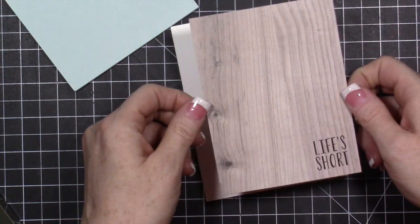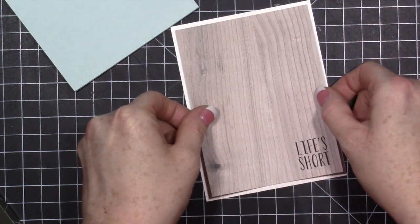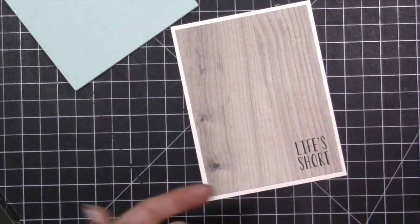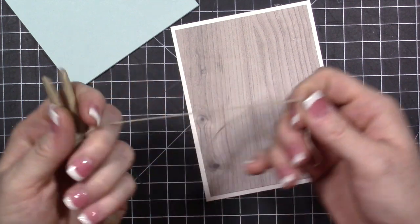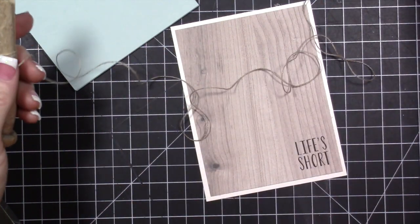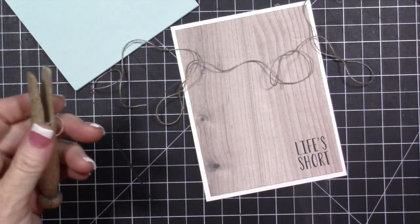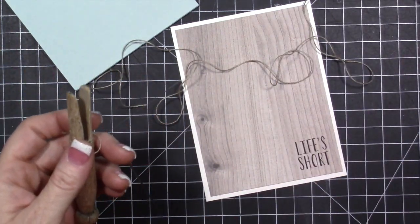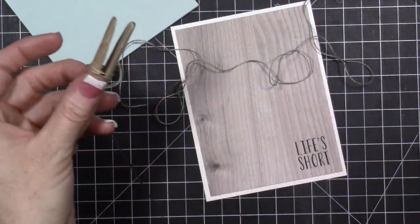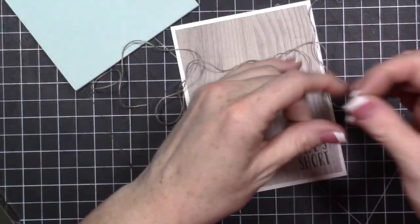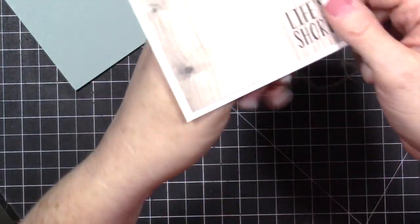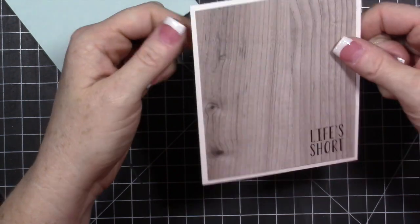So we went ahead and stamped 'life is short', and then we can go ahead and layer this onto our white piece. Then we're going to take some twine, and I got these old style clothes pins and I like to put my twine right around these. I just take it out of the package - it comes in a package like this - and I just take it right out of the package and I roll it right around the clothes pin. I have that new package because I need to do that. But that is the way I like to store my twine.